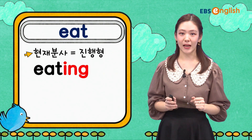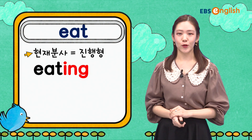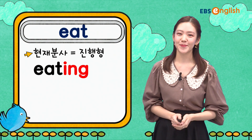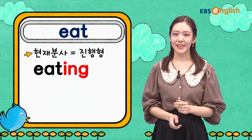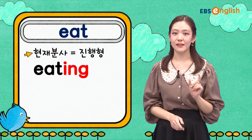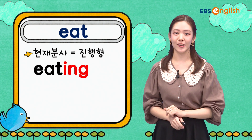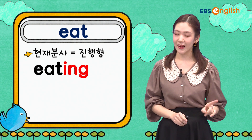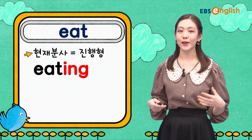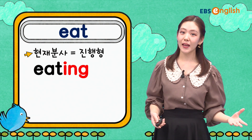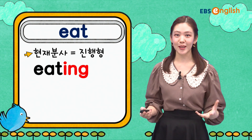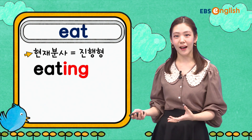현재 분사 아니면 혹은 진행형이죠. 뒤에 -ing가 붙어요. Eating. 여기서 주의할 거는 t가 조금 더 부드럽게 발음이 돼요. 그래서 'eating'이 됩니다. 현재 진행형 — 먹는 중이다, 먹고 있다가 되는 거죠. I am eating cereal. 나는 지금 cereal을 먹고 있는 중, 먹는 중이다 라고 말하면 됩니다.